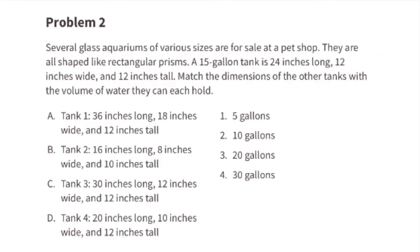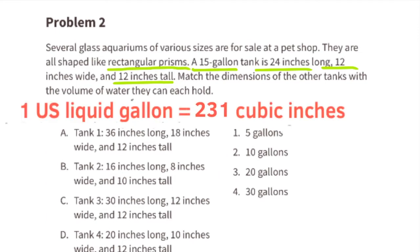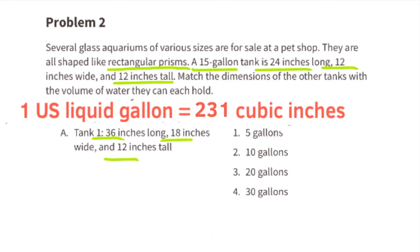Problem number 2. Several glass aquariums of various sizes are for sale at a pet shop. They are all shaped like rectangular prisms. A 15-gallon tank is 24 inches long, 12 inches wide, and 12 inches tall. Match the dimensions of the other tanks with the volume of water they can each hold. I'll find the volume of each tank, then divide by 231 cubic inches — the number of cubic inches in one U.S. liquid gallon — to get the gallon capacity.